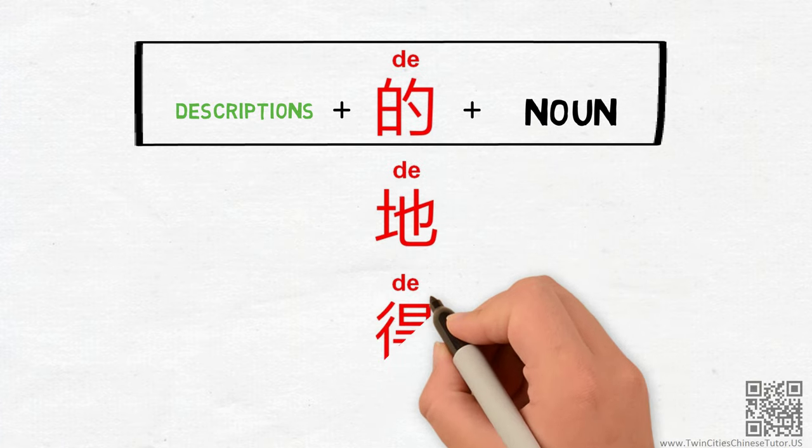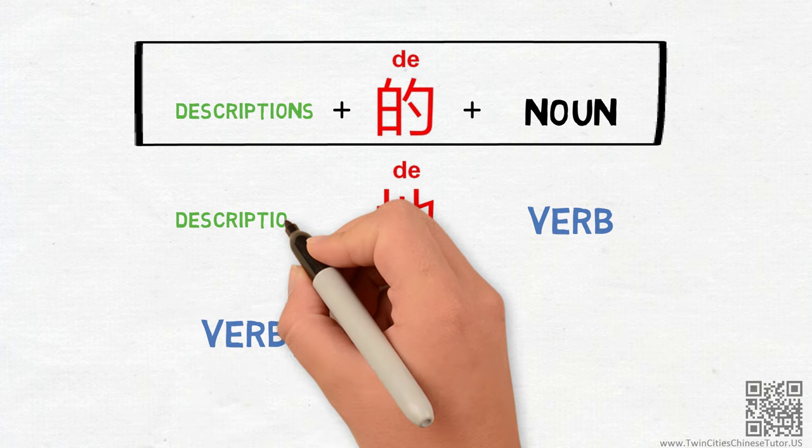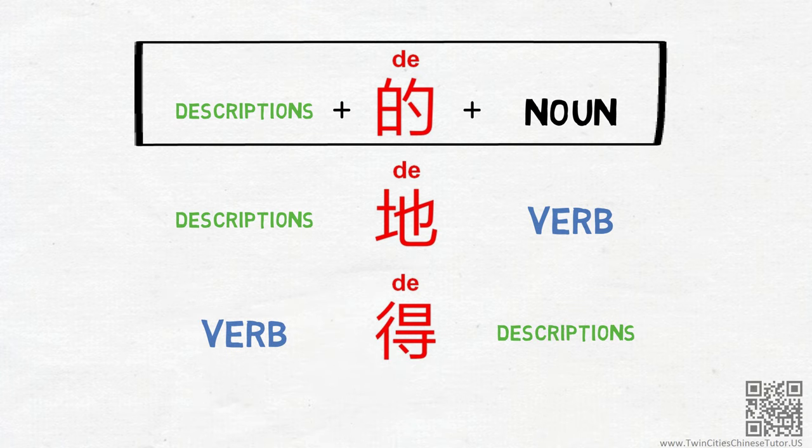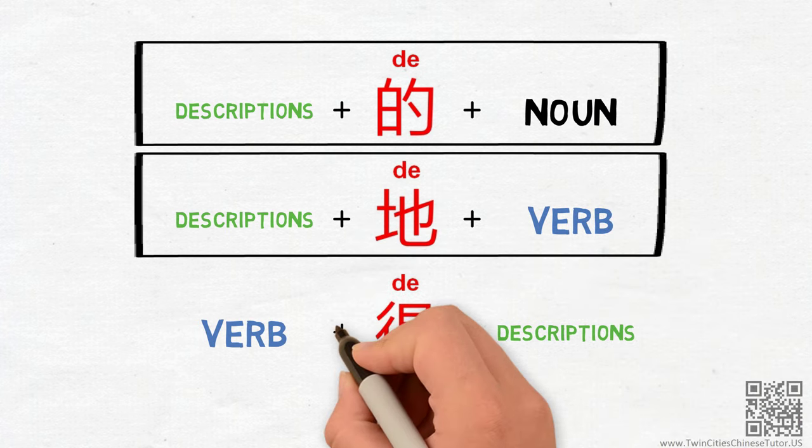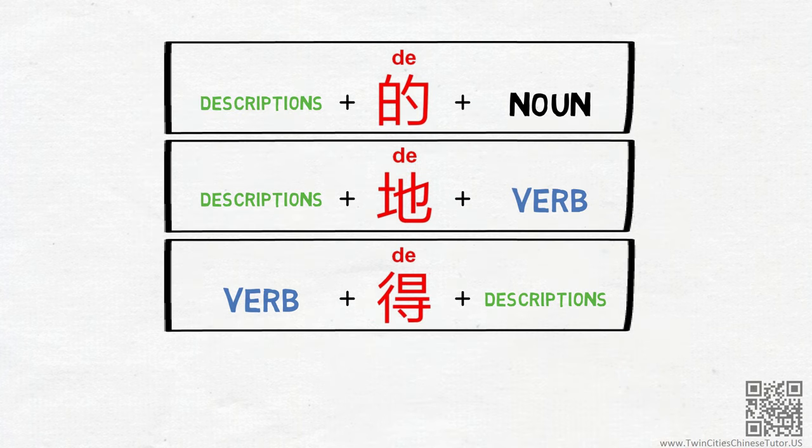The second DE and the third DE are both used to connect verbs with their descriptions, but in different orders. So, the pattern goes description plus DE plus verb, and verb plus DE plus description.